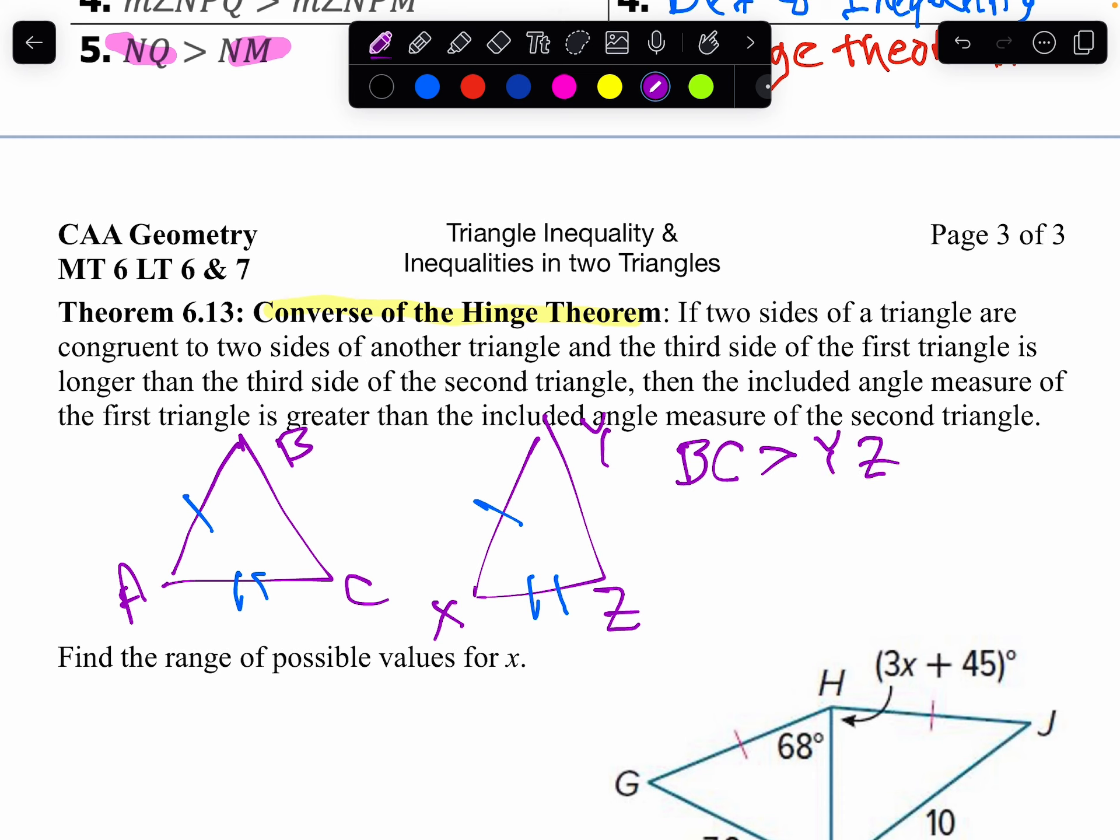then we just do the opposite. That is, if I know the sides are in inequality, I shoot across, angle A is going to be bigger than angle X.